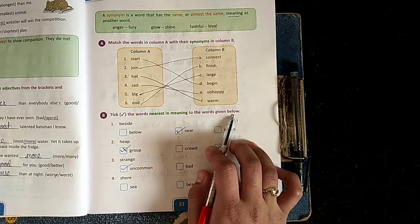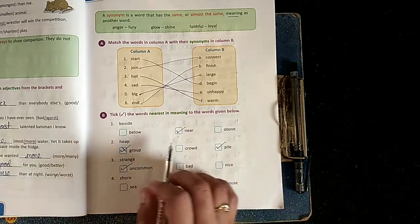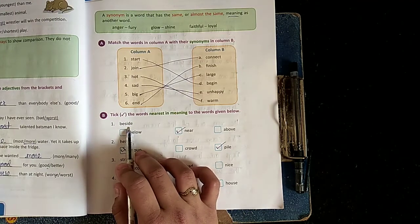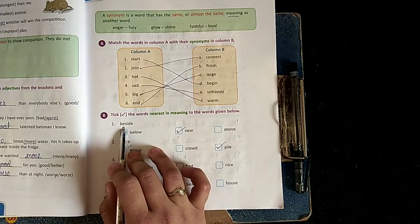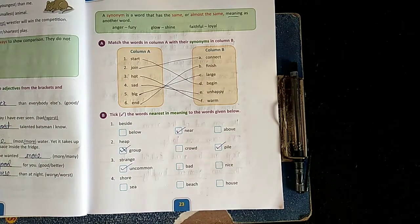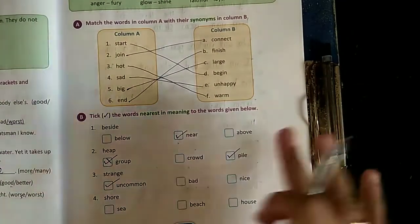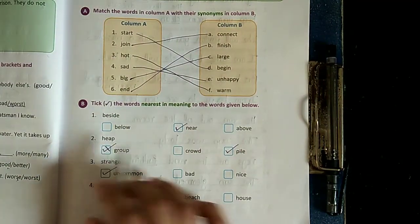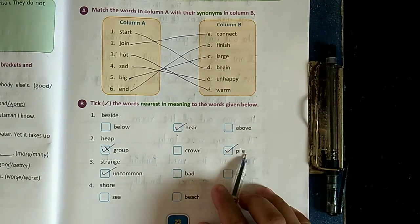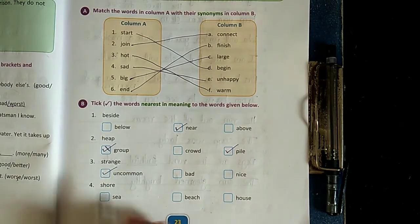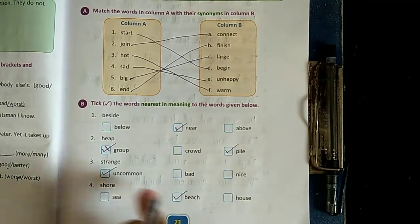First: beside. Beside means baju, so the answer will be near. Near ka meaning bhi yahi hai - pass me. Second: heap. Heap and pile. Third: stranger in common. Shore - beach. Shore means kinara, beach jo bhi paani ki area ka kinara.